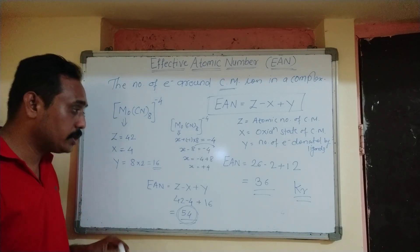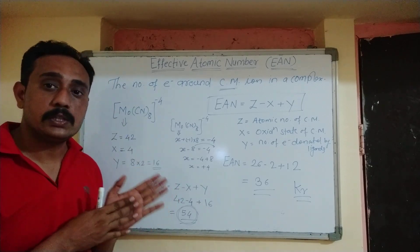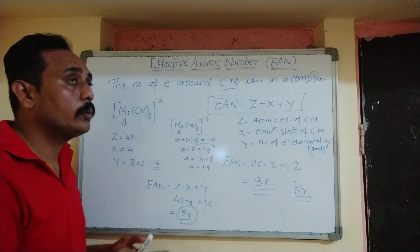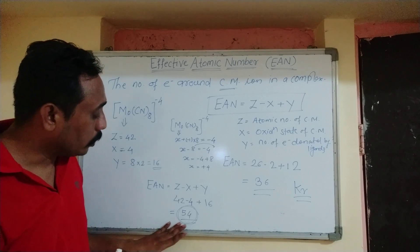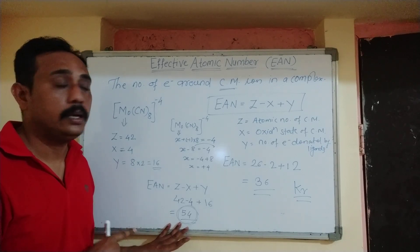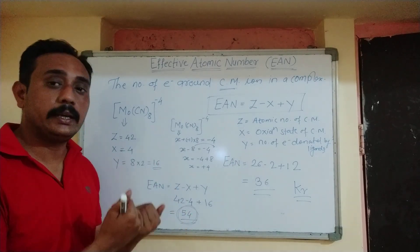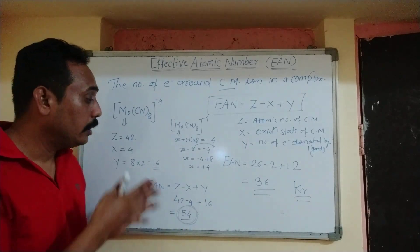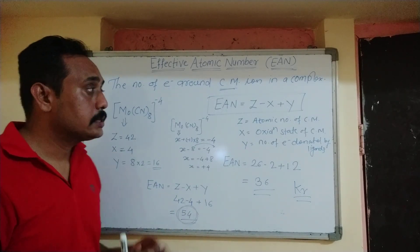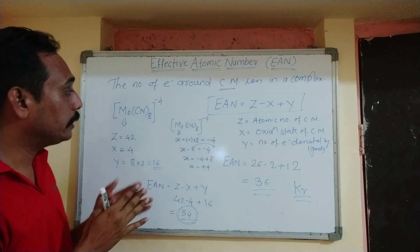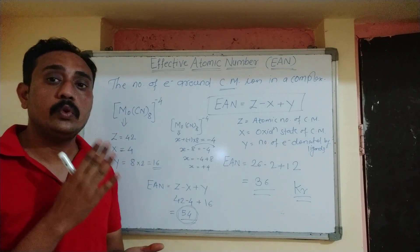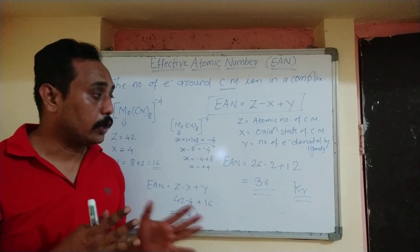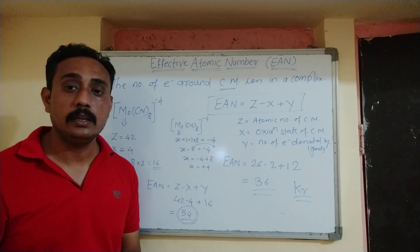The Effective Atomic Number always corresponds to the next rare noble gas in the same period as the central metal. The central metal keeps receiving electrons from the ligands until it achieves the atomic number of the next rare noble gas. However, there are some complexes where the EAN does not come out to exactly the nearby noble gas atomic number — there are exceptions.